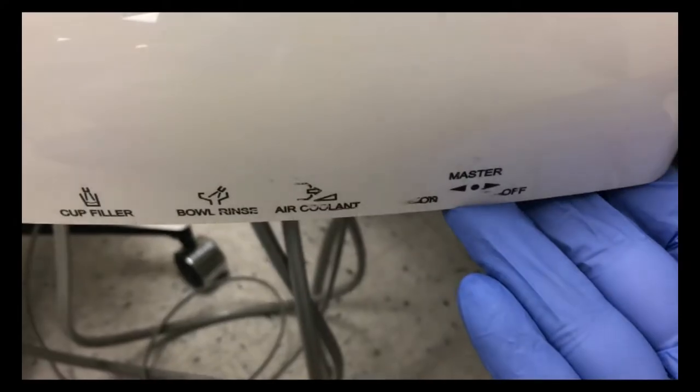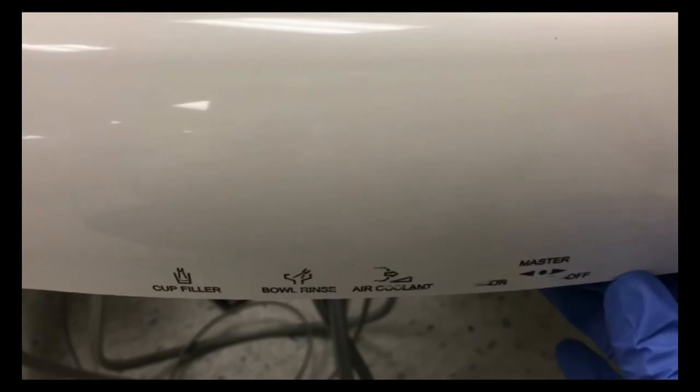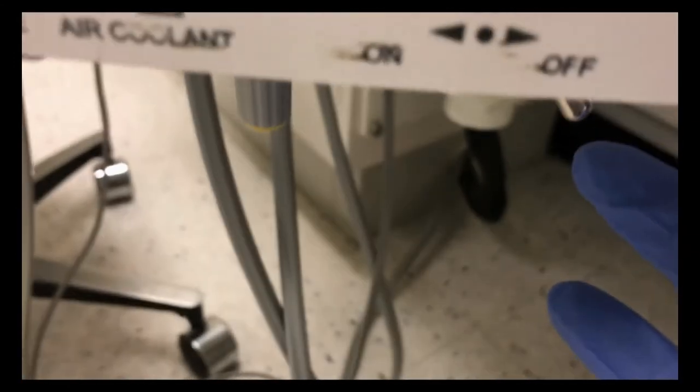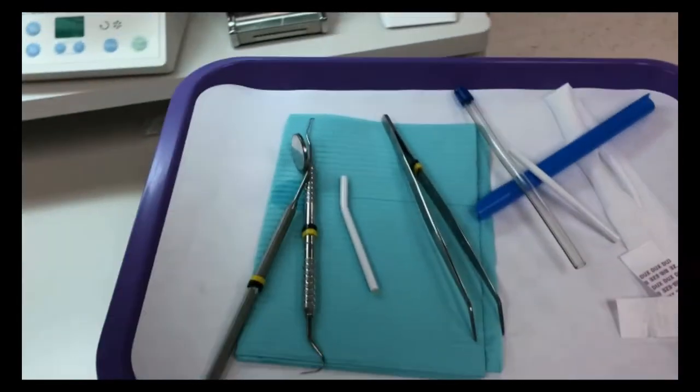Turn off your dental unit. Verify that the toggle is in the off position and turn the water switch off on your rheostat.